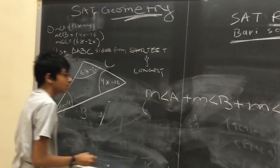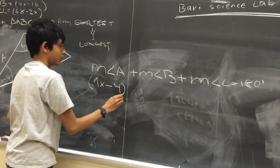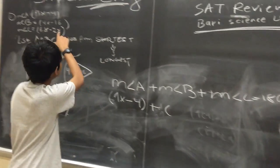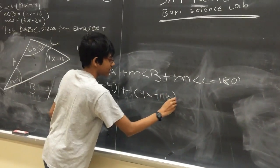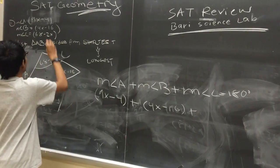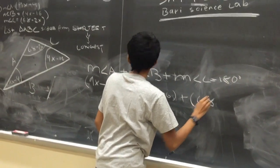The first expression representing angle A is 9x minus 4. Add that to 4x minus 16 representing the measure of angle B, and add that to 68 minus 2x representing angle C, and that equals 180.